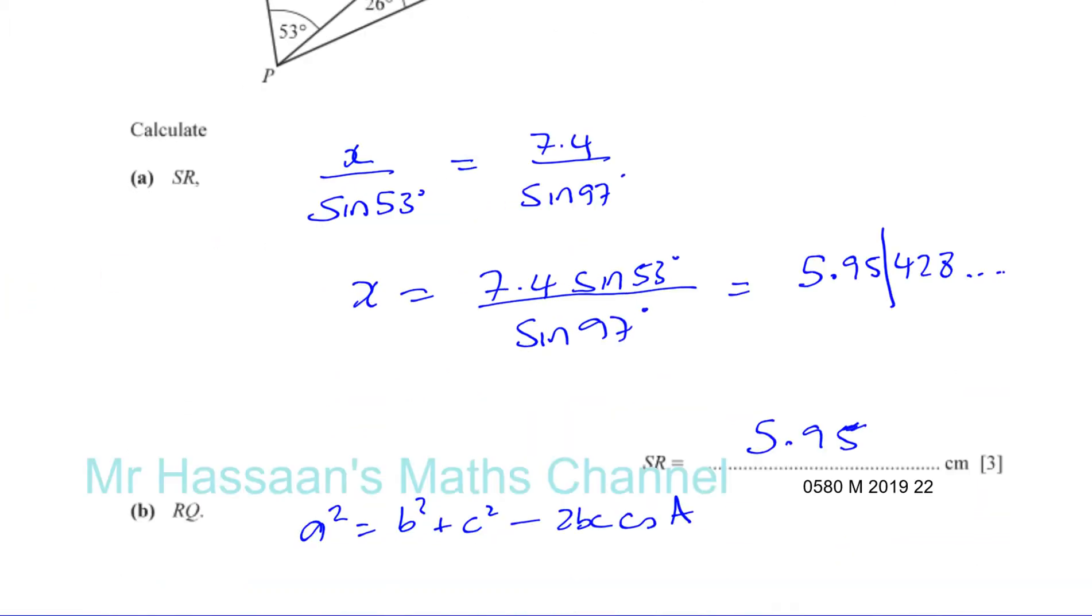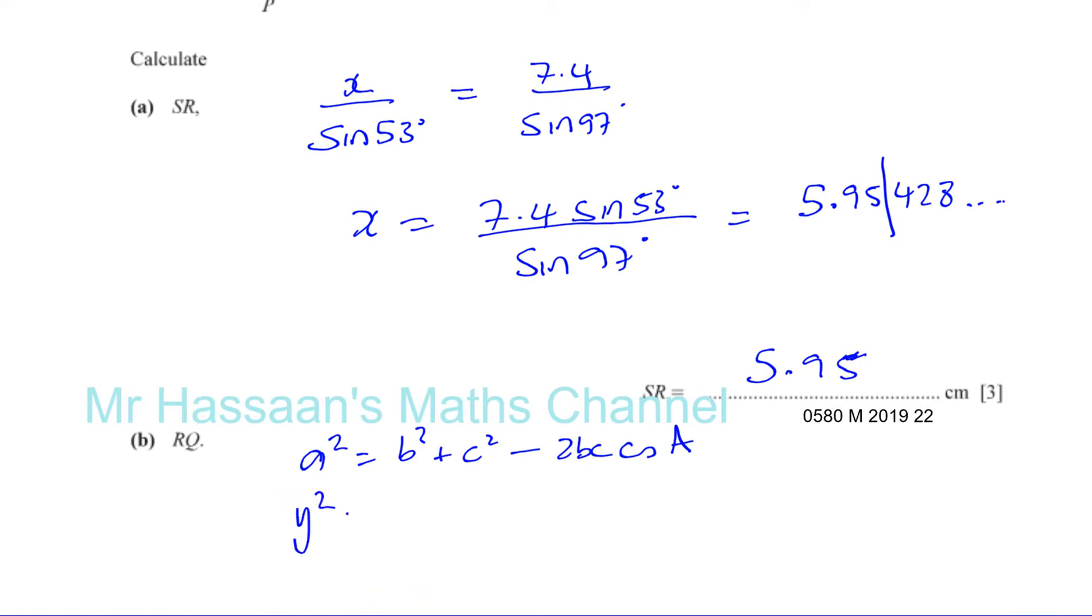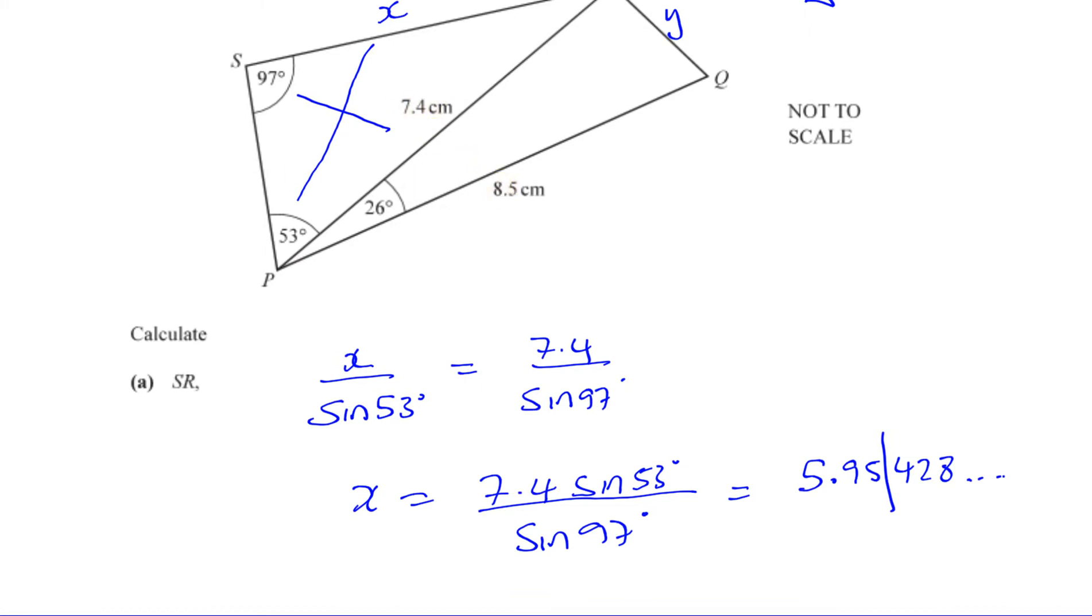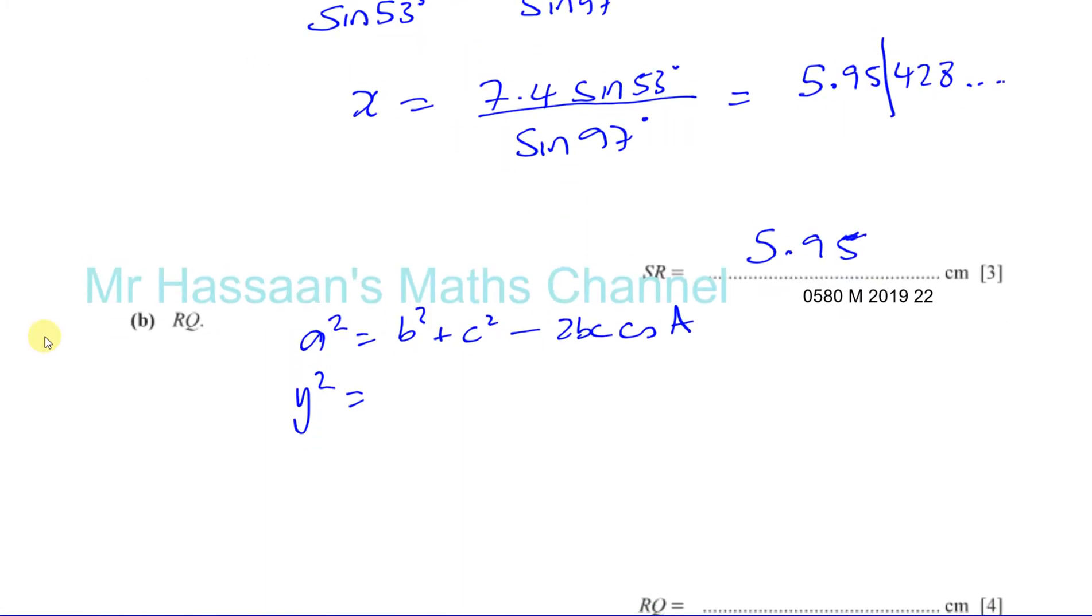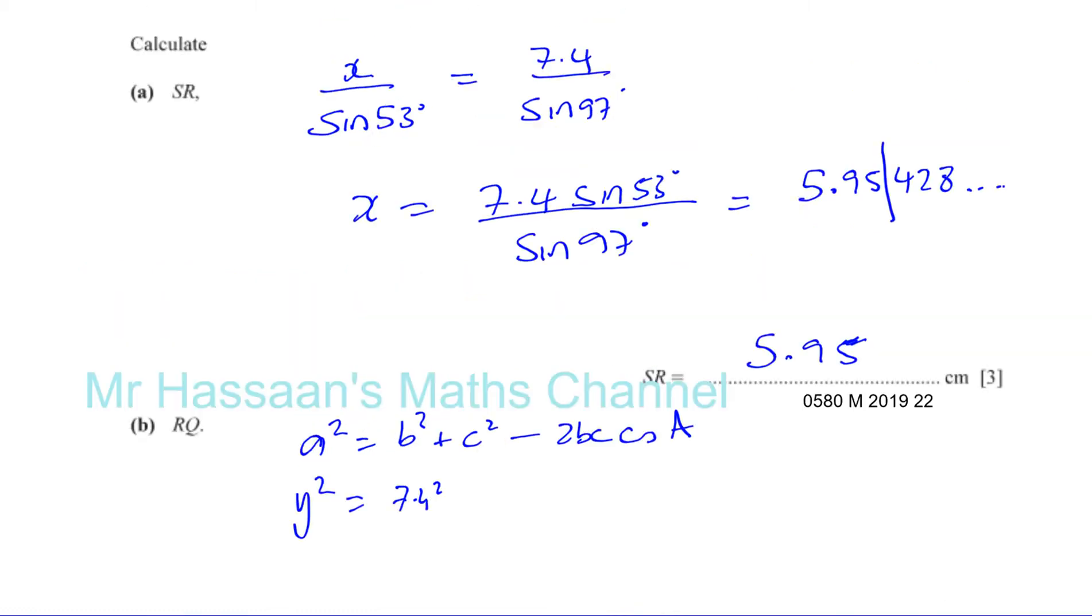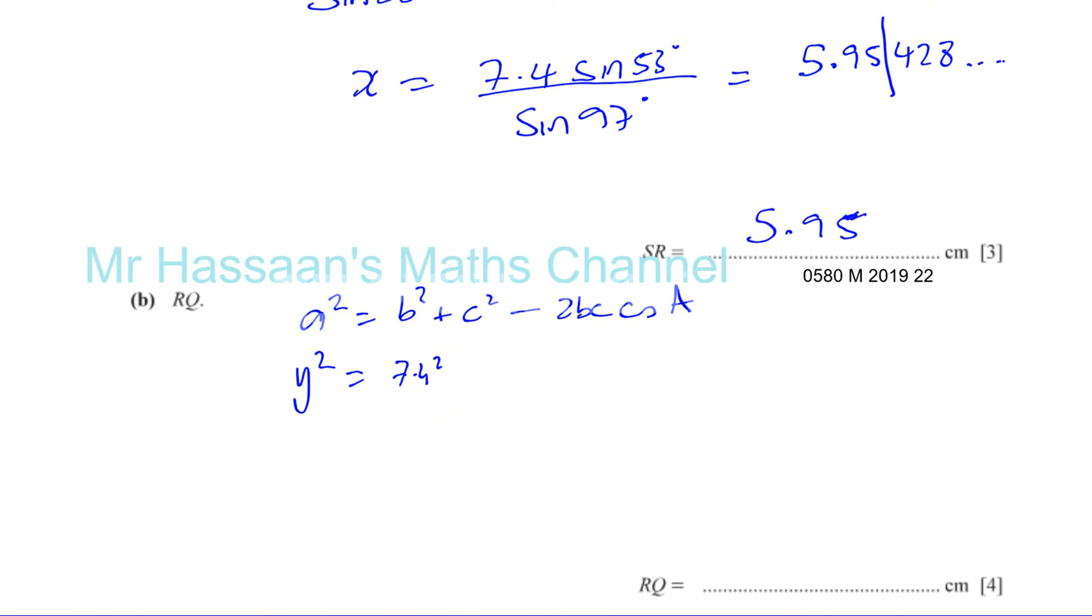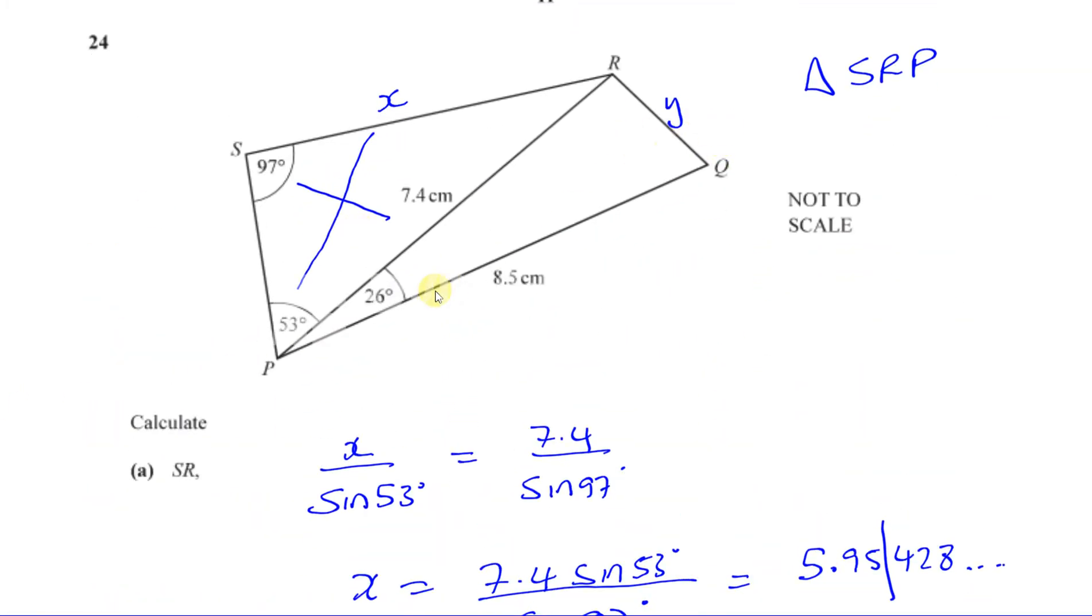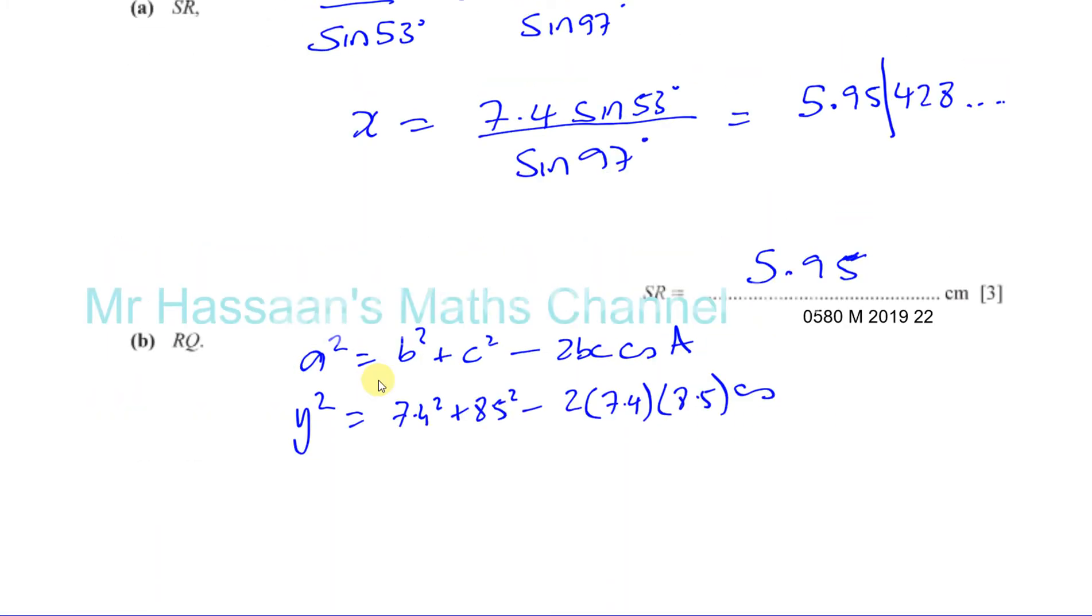So here we're going to have A squared, which is our Y. So Y squared equals B squared plus C squared. So it doesn't matter if I put 7.4 or 8.5 as B and C. It really doesn't matter. So I'll just put 7.4 squared plus 8.5 squared minus 2 times 7.4 times 8.5 times the cosine of the angle which is opposite the side we're trying to find, and we know which is 26 degrees, the cosine of 26.